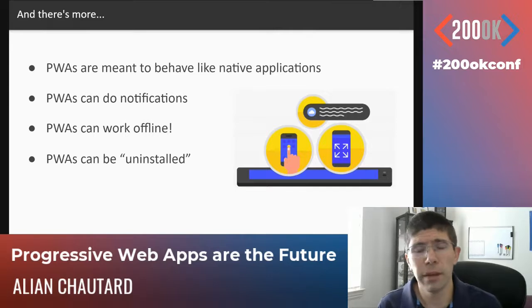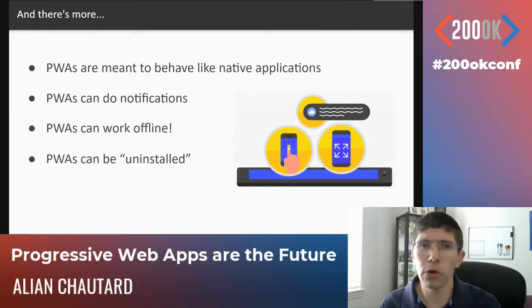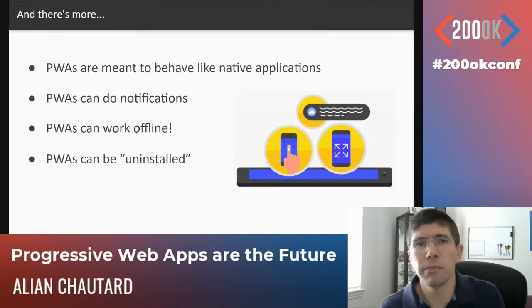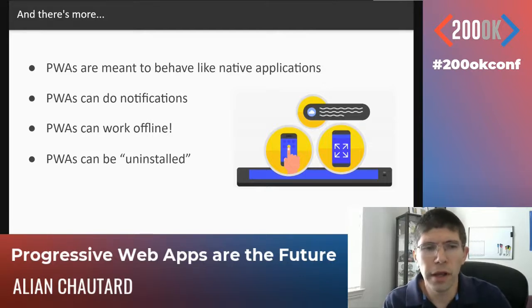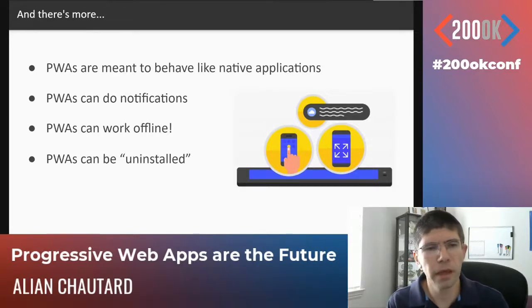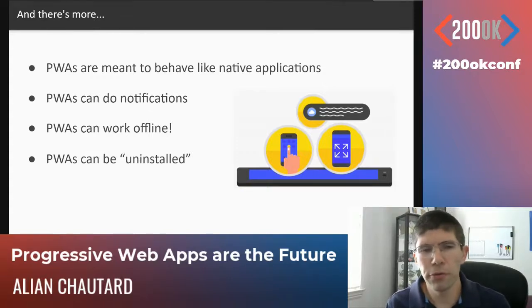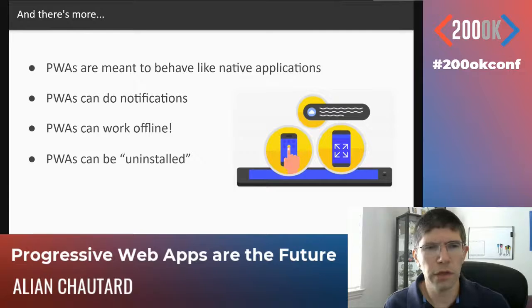Another big feature is offline capability. By caching data, images, and JavaScript upfront, you can make your PWA work offline. Not all apps are meant to work offline — some require a server for backend interactions — but if your app has features that make sense offline, you can do that. And finally, you can uninstall the app, just like you can install it — which is really just going to clear the cache on the device to remove everything that was installed earlier.